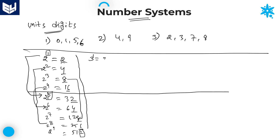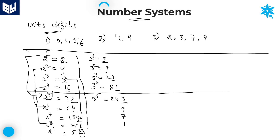Now let's check whether this applies to the remaining numbers. For 3: 3^1 = 3, 3^2 = 9, 3^3 = 27, 3^4 = 81 — the units place is not yet repeated. But 3^5 = 243, and the units place is repeated. The same cycle of 3, 9, 7, 1 repeats after every 4 cycles. So if any number is ending with 3, the possible units place values are only 3, 9, 7, or 1.